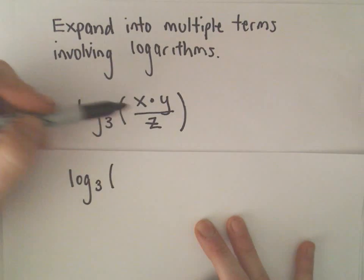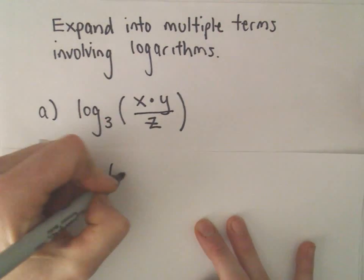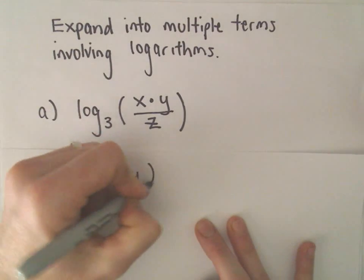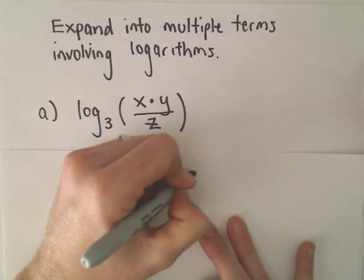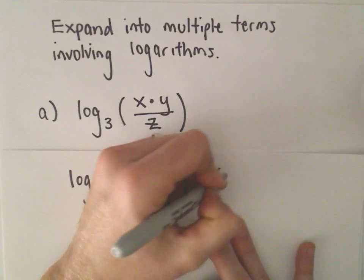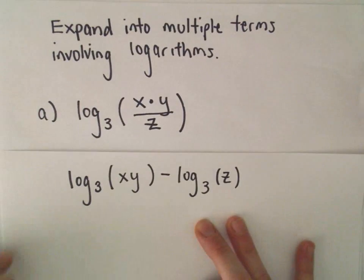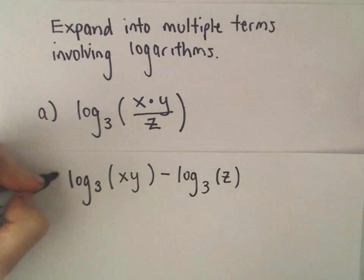We keep the logarithm base the same. We take whatever's in the numerator and subtract away whatever's in the denominator. That would be the first step.